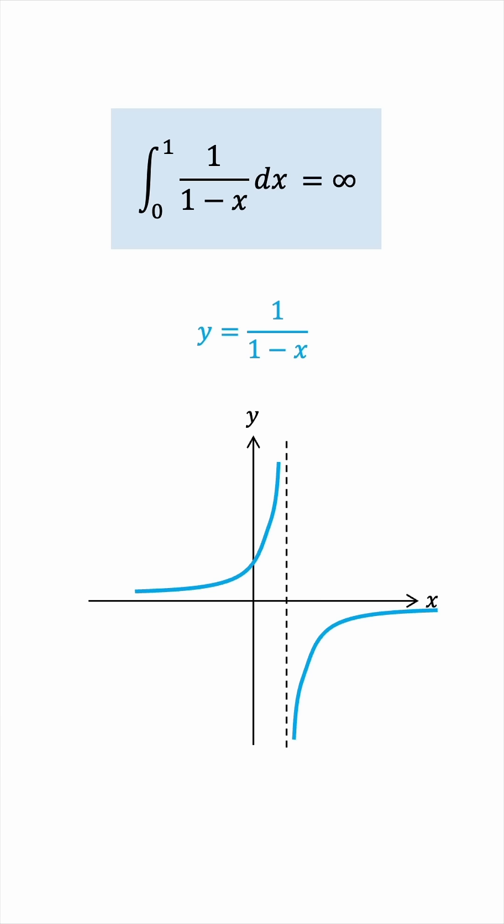The area we're trying to find is the area under this curve from 0 to 1. So, it's this area over here. So, the question becomes, does the curve approach the asymptote fast enough for the area to converge to a finite number? From the integral, we know that the answer is no.